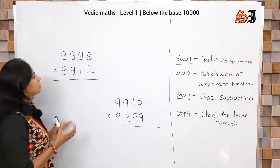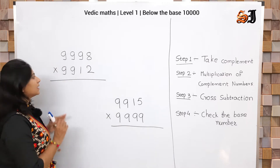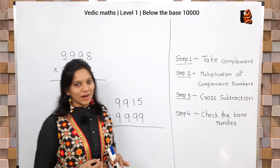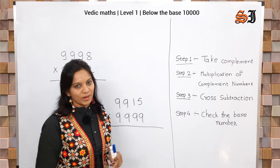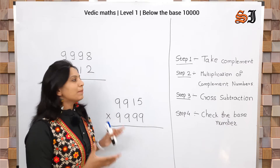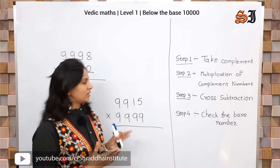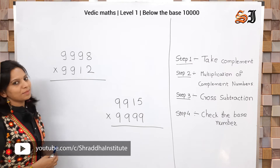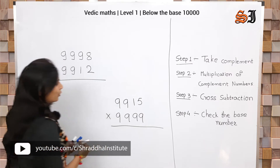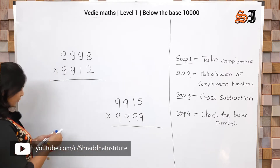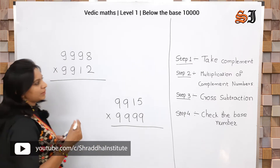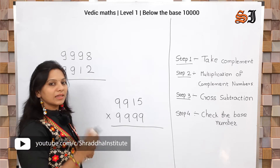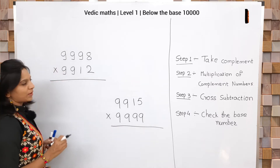The multiplication example is 9998 multiplied by 9912. This is Vedic math level 1, topic: below the base 10,000. The same rules apply as in below the base 100 and 1000.